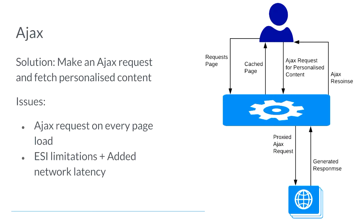So if we don't do ESI, another common approach is to do this as an AJAX request. Instead of multiple requests in series as ESIs, we could either fire off multiple AJAX requests in parallel, or do one AJAX request and have some JavaScript split that out and populate several separate places on the page. The problem is that this has a lot of the same disadvantages as ESI — we're still connecting to our app server at least once for every page load.